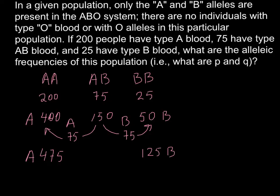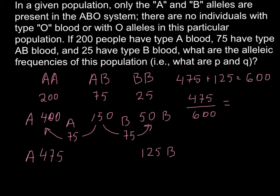Now is the last step. We have to add or sum these two types of alleles. So we are going to add 475 plus 125 and we are going to have altogether 600 alleles. And now we have to calculate frequency by dividing, for example, 475 by 600 and we are going to get 0.79.